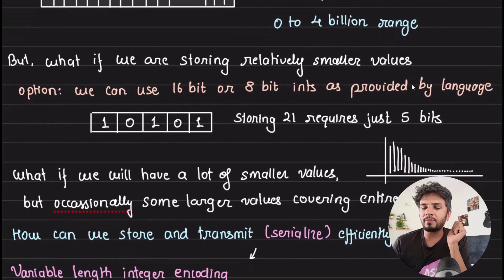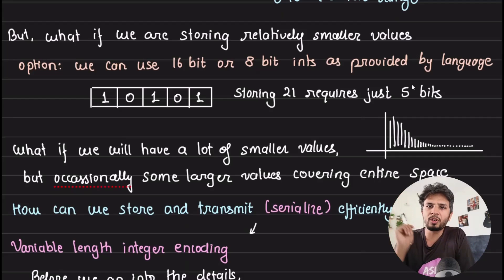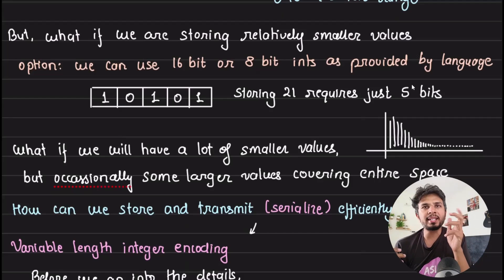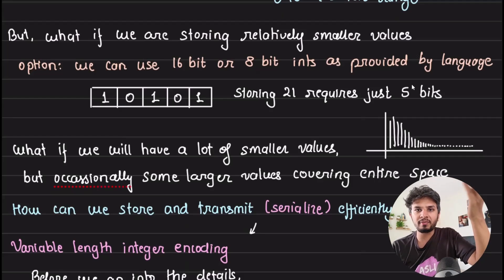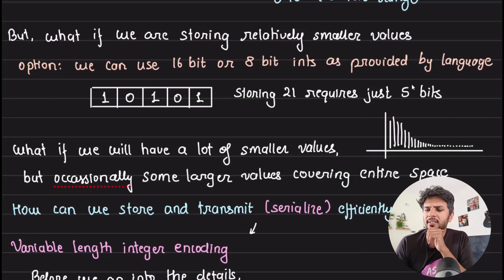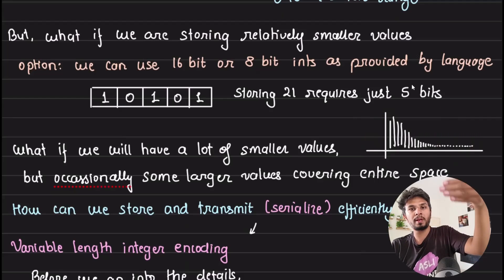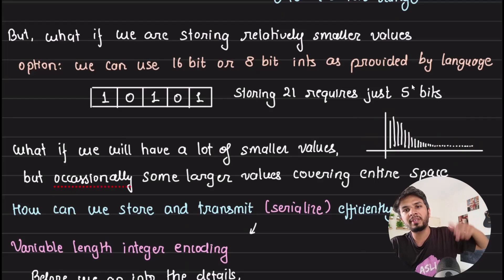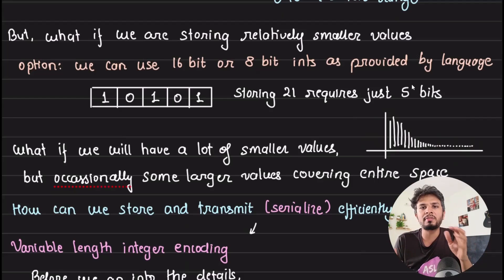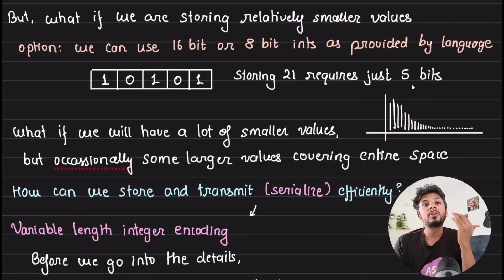For example, if I am storing the number 21 in a 64-bit integer, the bare minimum bits required to represent 21 are 5 bits (10101). So I am effectively wasting 64 minus 5 = 59 bits. This histogram is true for most use cases where we use a lot of smaller values compared to larger ones. So if we store or transmit a 4-byte integer as 4 bytes over the network or on disk, we are wasting a lot of space — this serialization is costly.